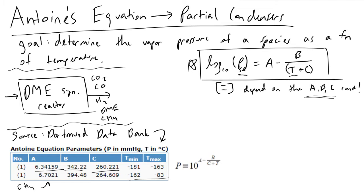Turning to the example we're working through — our DME synthesis reactor — we're trying to extract DME from other components: carbon dioxide, carbon monoxide, hydrogen, and methane. Based on looking up these values, we'll find that DME and carbon dioxide are significantly heavier components.